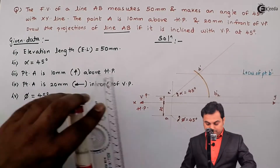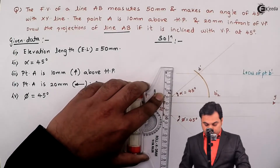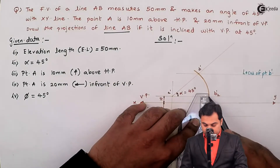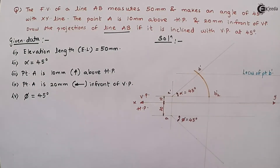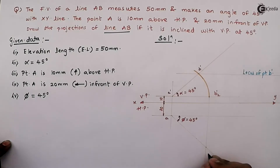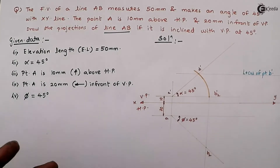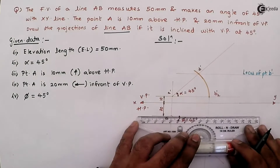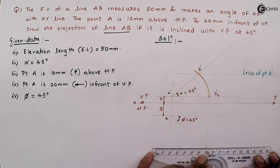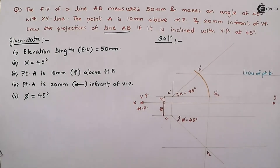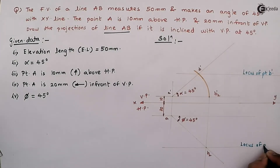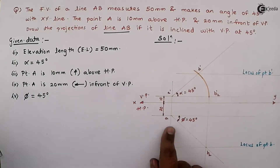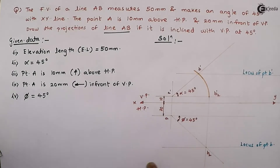Projecting it with the help of a vertical line in the top view — where it cuts this inclined line, it gives point B2. This will be called the locus of point B. The line obtained here is the true length.